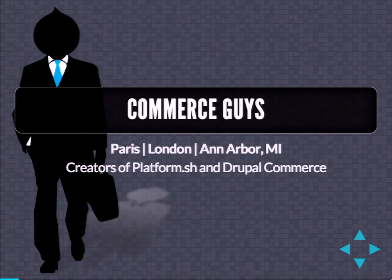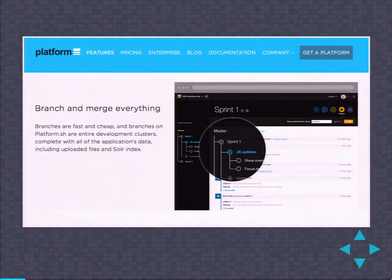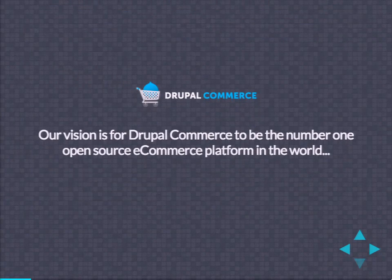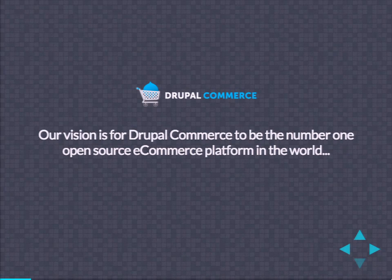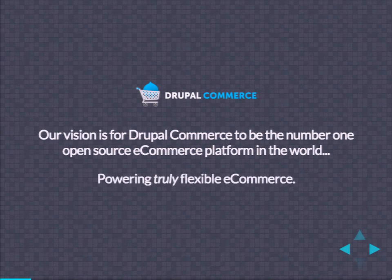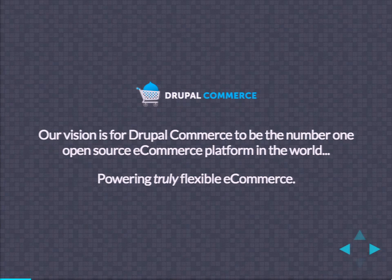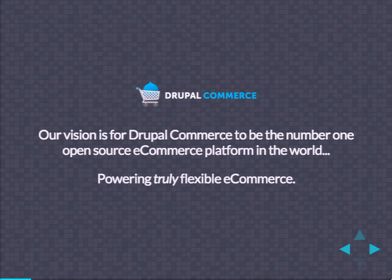Drupal Commerce was born in late 2010, early 2011, finally launching at DrupalCon London. Our vision since the beginning has been for Drupal Commerce to be the number one open source e-commerce platform in the world. We've always said that we power truly flexible e-commerce because we're built on Drupal — anything can be altered, nothing has to be hard-coded. A lot of what we do depends on rules, views, and other things that can be overridden, disabled, or changed.